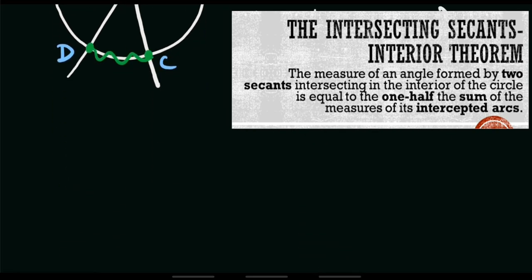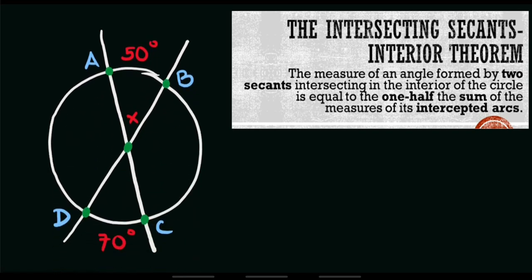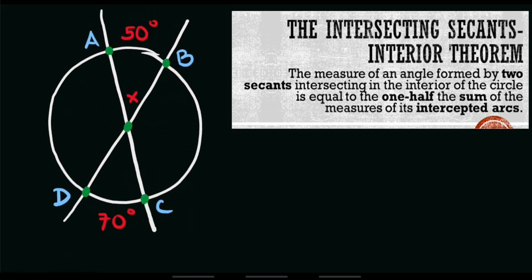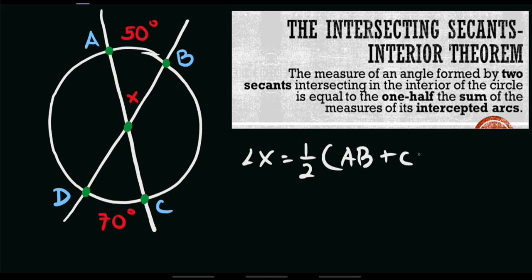Let's try to answer this given example. We are asked to solve for angle x, wherein the value of arc AB is 50 degrees and arc CD is 70 degrees. Let's write our formula: angle x equals one half of the sum of its intercepted arcs, so we have arc AB plus arc CD.